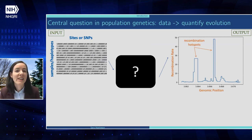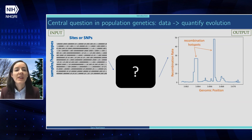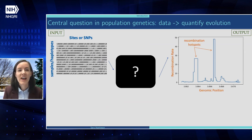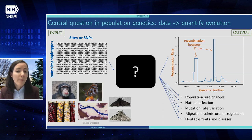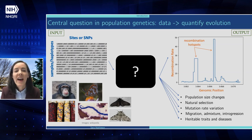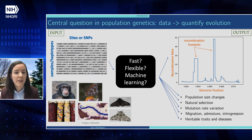One of the big questions in population genetics is how do we go from all of the simulated data, all of the sequence data, and actually learn something about evolution. Here I have a big matrix of zeros and ones representing a bunch of different samples and a bunch of different SNPs. Say I want to learn something like recombination hotspots, but I don't want to do this just for this particular sample or problem. I want to do this more generally in any species and for any evolutionary phenomenon I'm interested in — heritable traits, diseases, admixture, natural selection. If I were to think about what properties I really want for this type of method, I would definitely want it to be fast and flexible, and maybe a machine learning method.